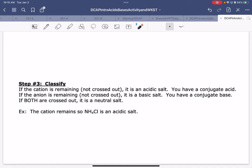If the cation is remaining, not crossed out, it's an acidic salt. You have what we call a conjugate acid. If the anion is remaining, it's a basic salt. You have a conjugate base. And if they're both crossed out, it's a neutral salt. Since the cation remains in this, then this is an acidic salt.